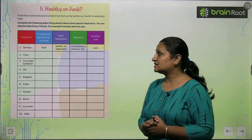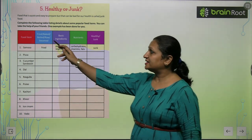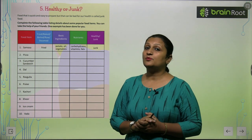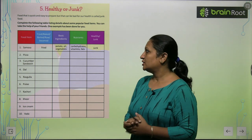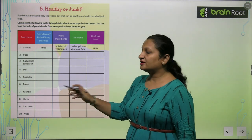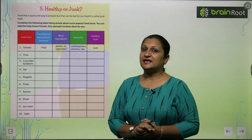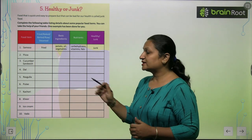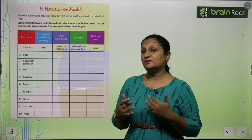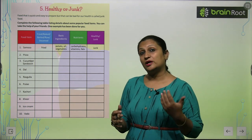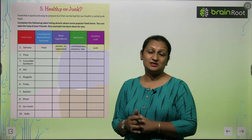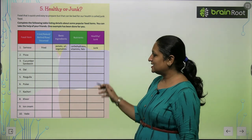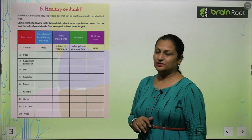Kheer is made by boiling rice in milk. Its basic ingredients are rice, milk, and sugar. Its nutrients include carbohydrates, a small amount of proteins, and fat. It is a healthy food.